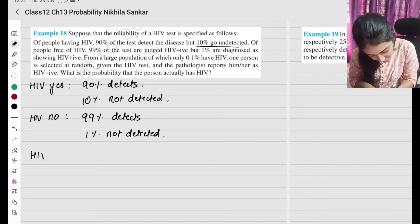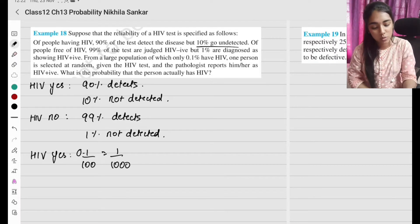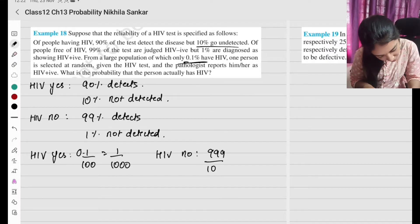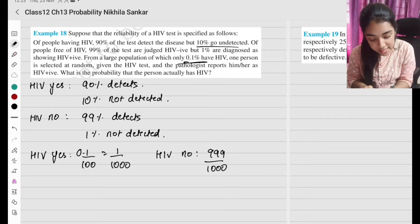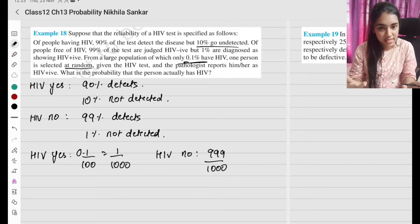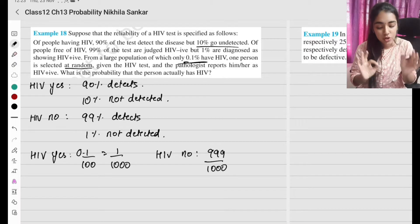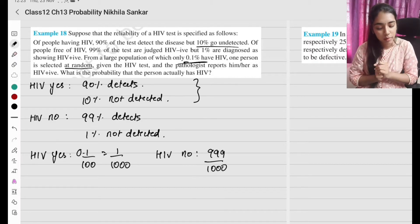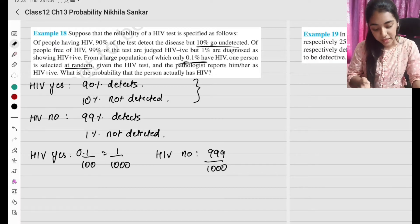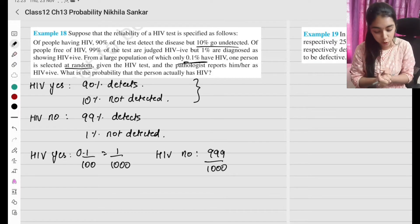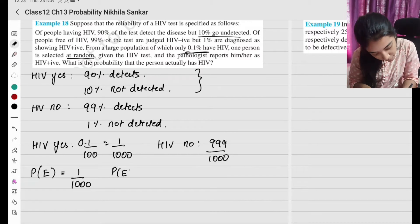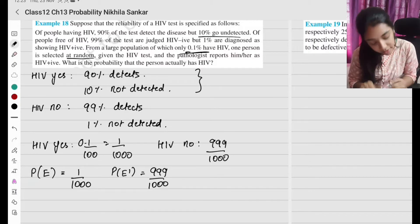From a large population, only 0.1% have HIV. So the probability of HIV positive is 1 divided by 1000, and the probability of HIV negative is 999 divided by 1000. One person is selected at random, given the HIV test, and the pathologist reports him or her as HIV positive. What is the probability that the person actually has HIV?